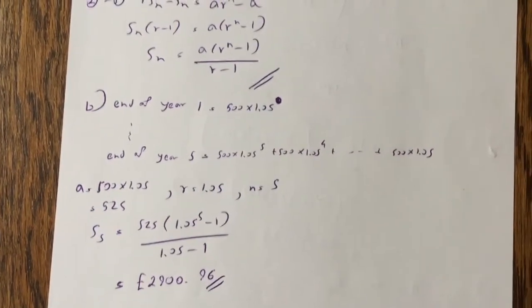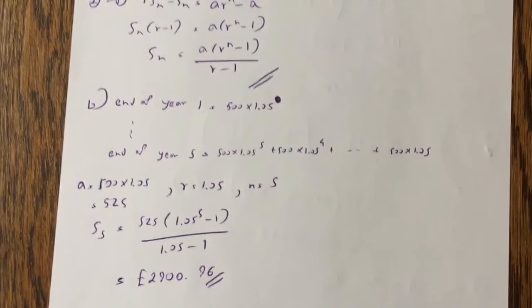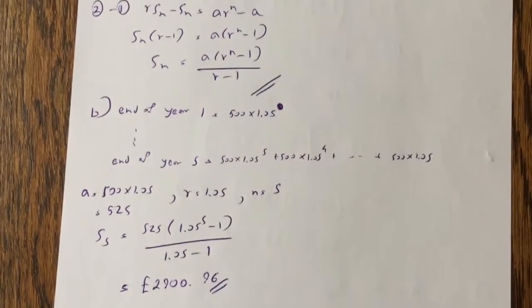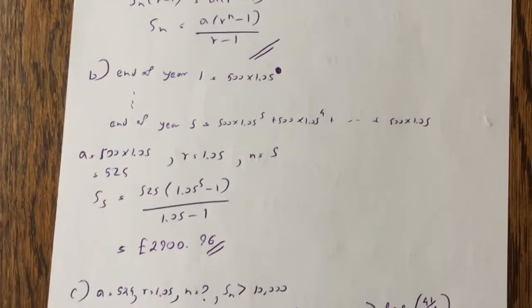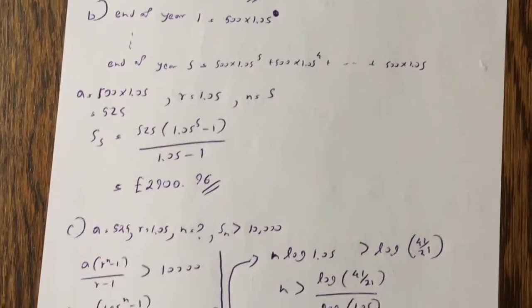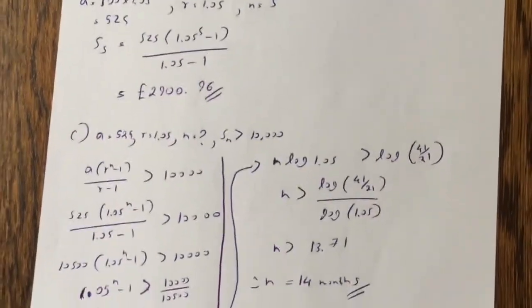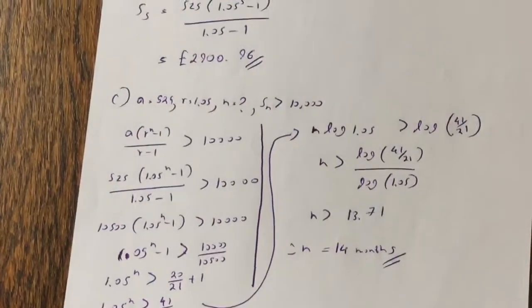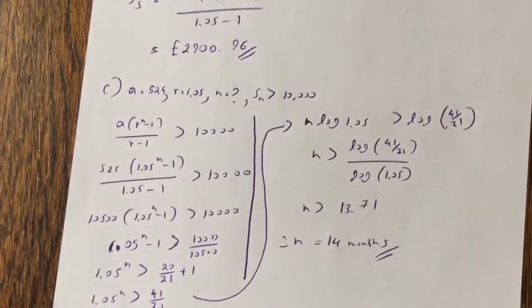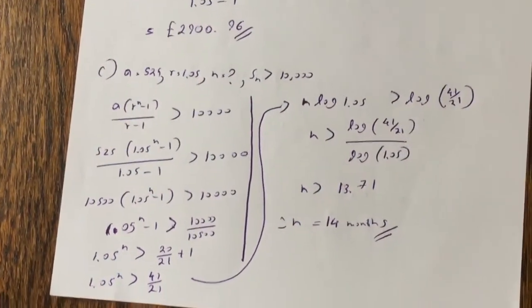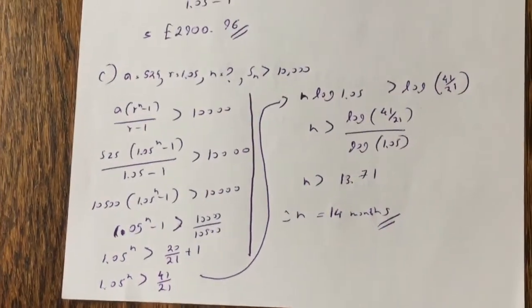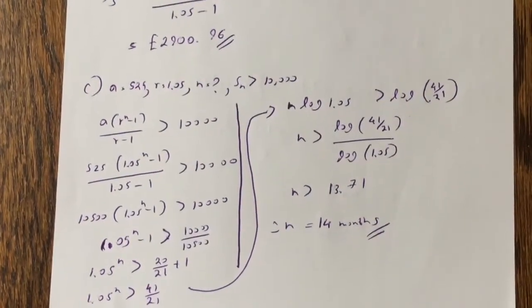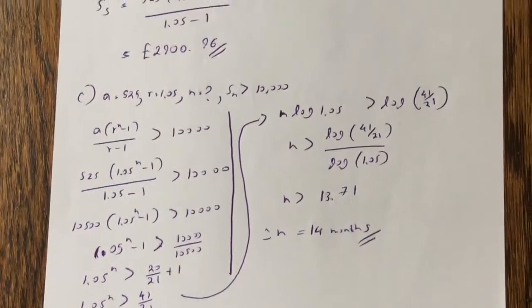If you don't understand this question, you can ask me a question on the comments box, and I'll try to answer to the best of my ability, okay? And then we need to know which month we're going to have a balance of 10,000 or more, so the sn has to be greater than 10,000, so you plug the values in, and you end up getting, if you go through each step, you end up getting n greater than 13.71, so it'll be 14 months.